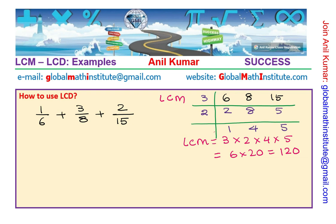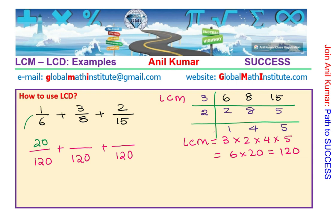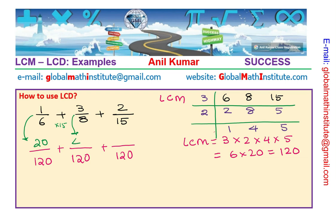To add these fractions, this LCM of 120 becomes the LCD. We rewrite them as equivalent fractions with denominator 120. For 1 over 6: multiply by 20, giving 20 over 120. For 3 over 8: multiply by 15, giving 45 over 120. For 2 over 15: multiply by 8, giving 16 over 120.